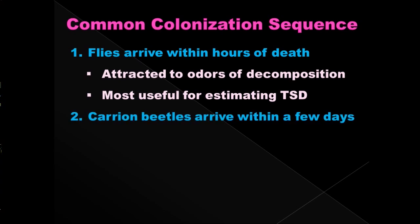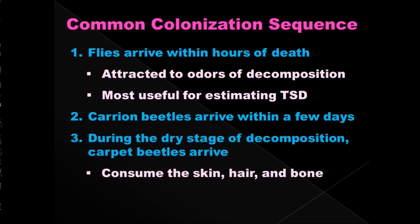Carrion beetles are going to arrive within a few days. Then other beetles — dry beetles, carpet beetles — are going to arrive during the drier stages of decomposition. They're going to be interested in the dry, crunchy bits of a body: the hair, the skin, and the bone.